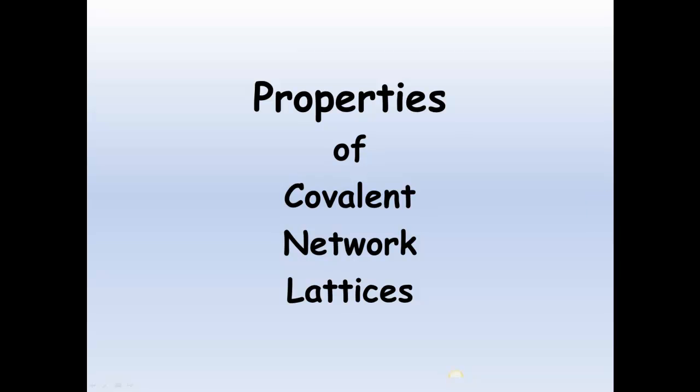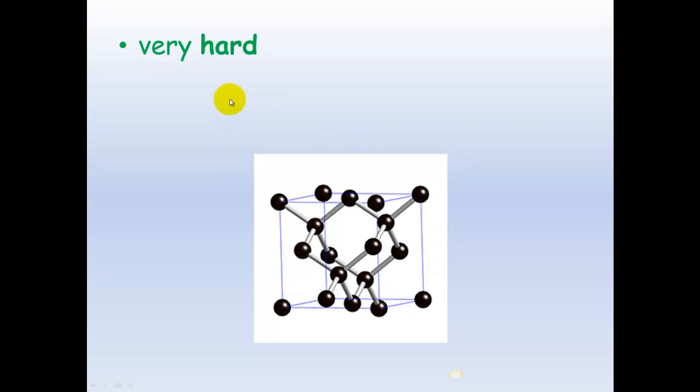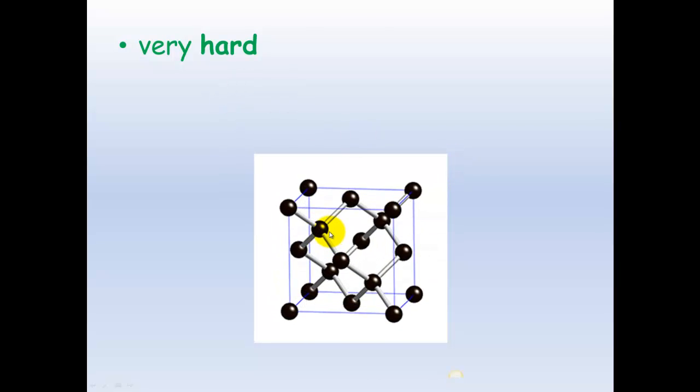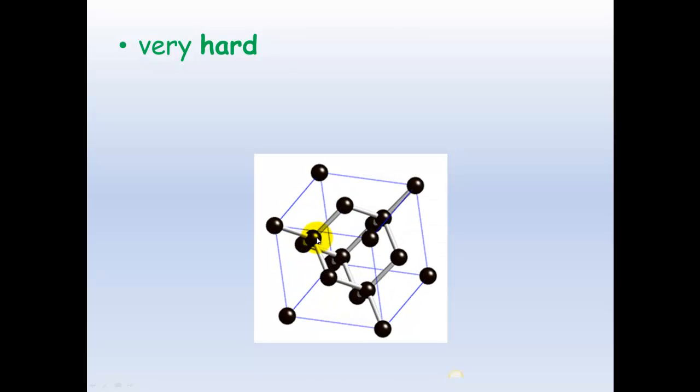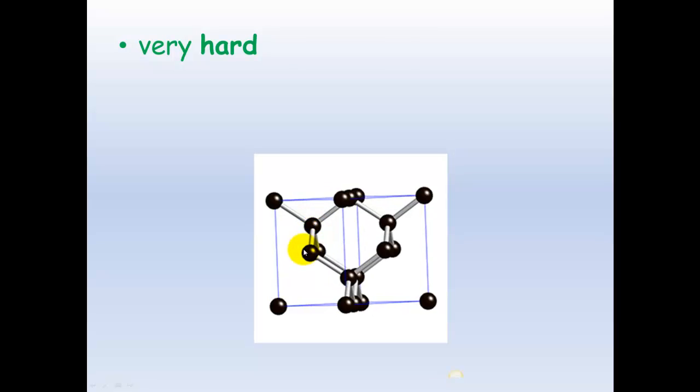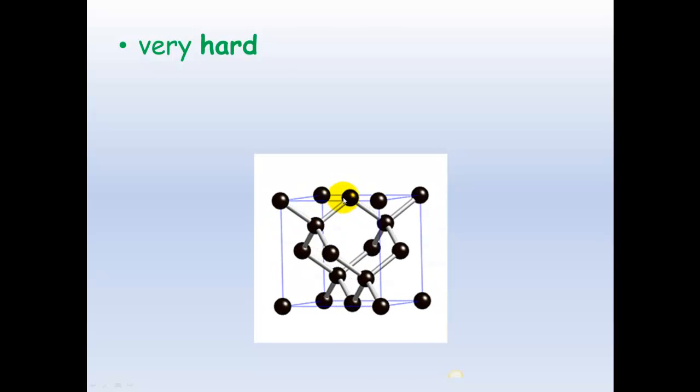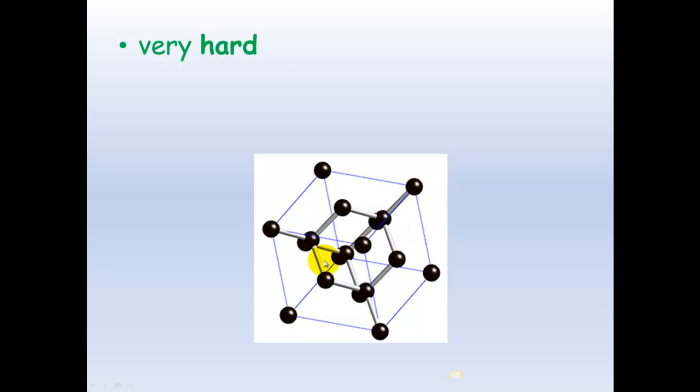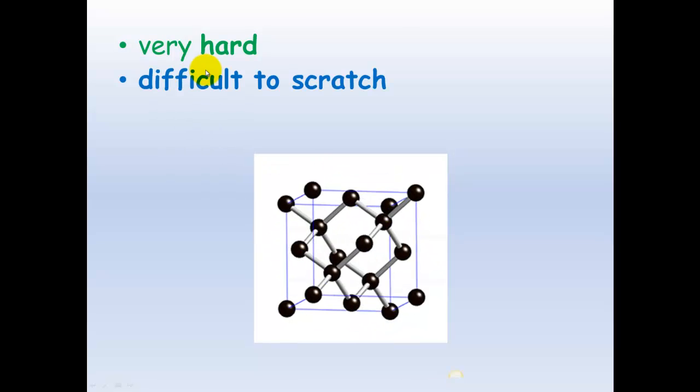So the properties of covalent network lattices: They're very hard, again because of these strong covalent bonds. You can see here clearly this one carbon is strongly covalently bonded to four other carbon atoms. These covalent bonds are hard to break, so it makes it a really hard substance.